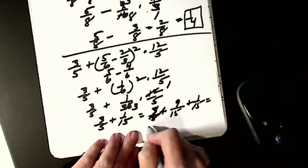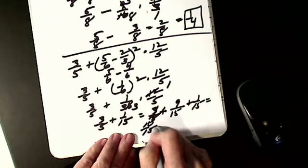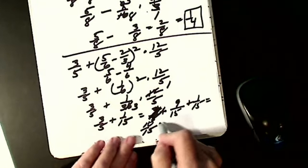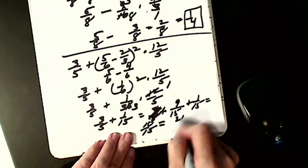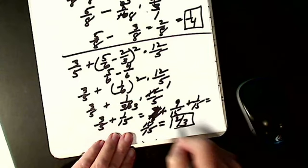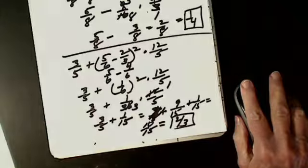That gives me ten-fifteenths. Simplify: five into ten is two, five into fifteen is three. So I get two-thirds. Now you just have to try a few on your own.